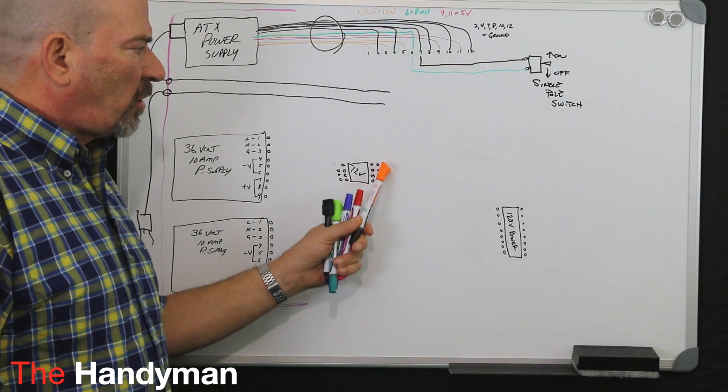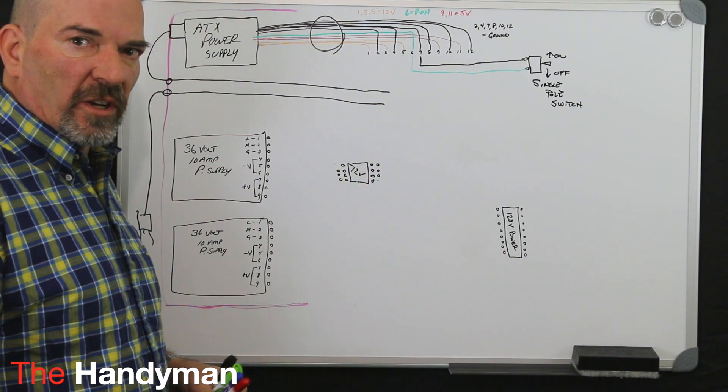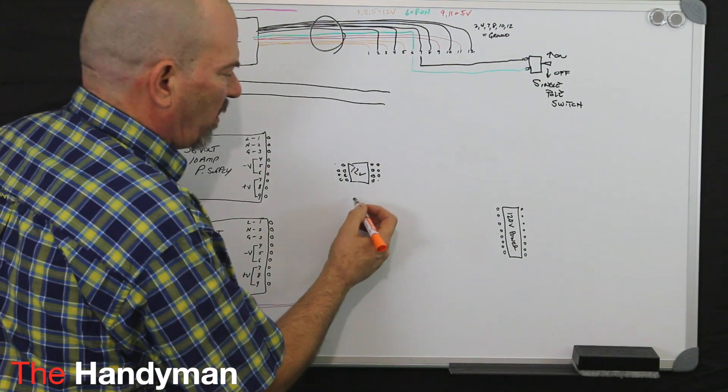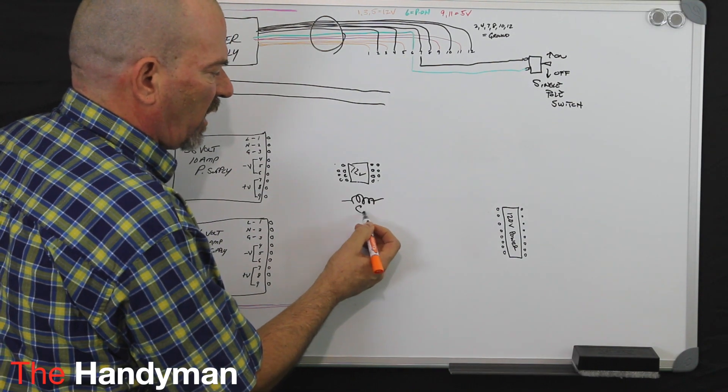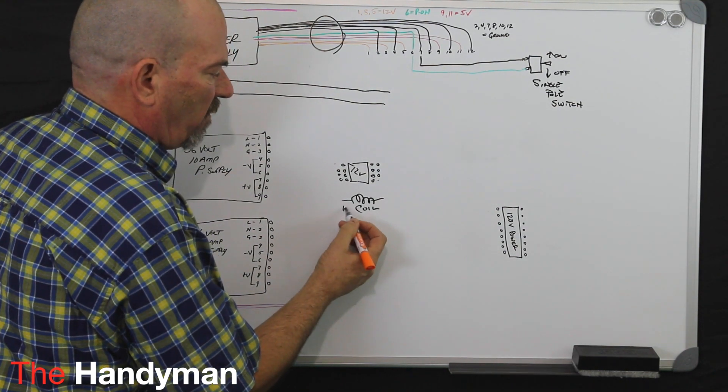And on this relay, two of the screw terminals are going to be your coil, and that should be represented something similar to that, or it'll say coil, or 12-volt coil.